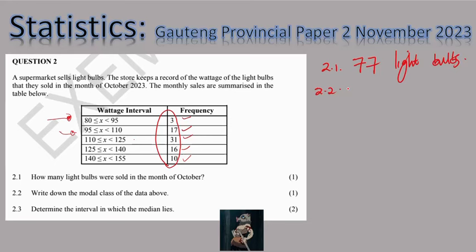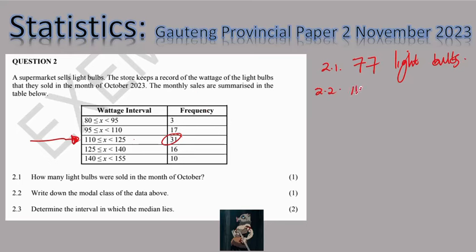Question 2.2 says write down the modal class. The modal class is simply the class interval that has the most bulbs sold. I don't want to overcomplicate this — the modal class is the interval with 31 light bulbs sold, which is the interval 110 ≤ x < 125.